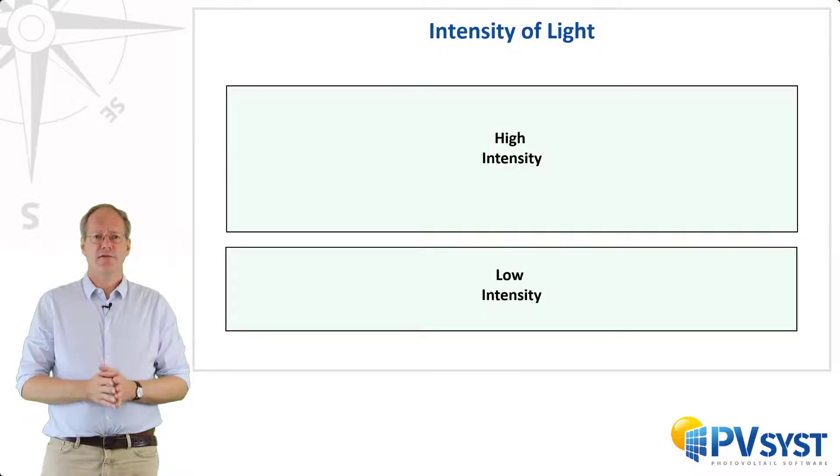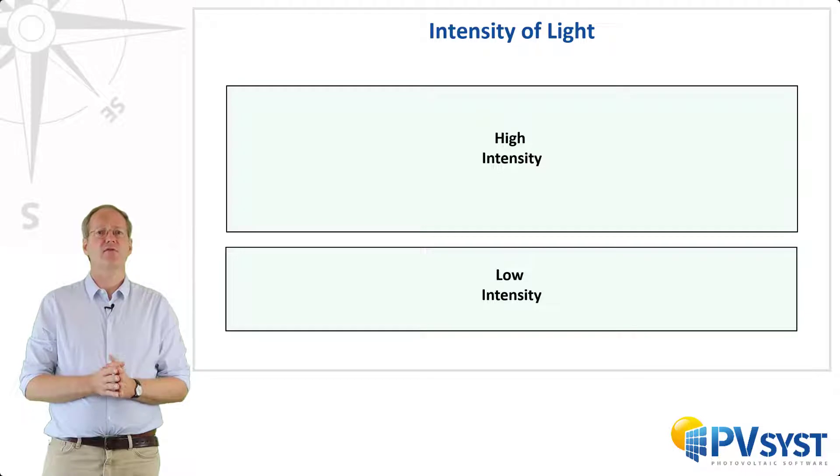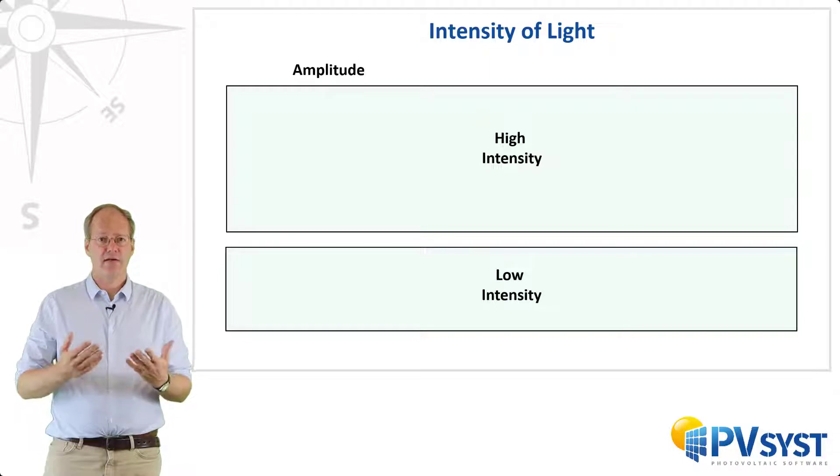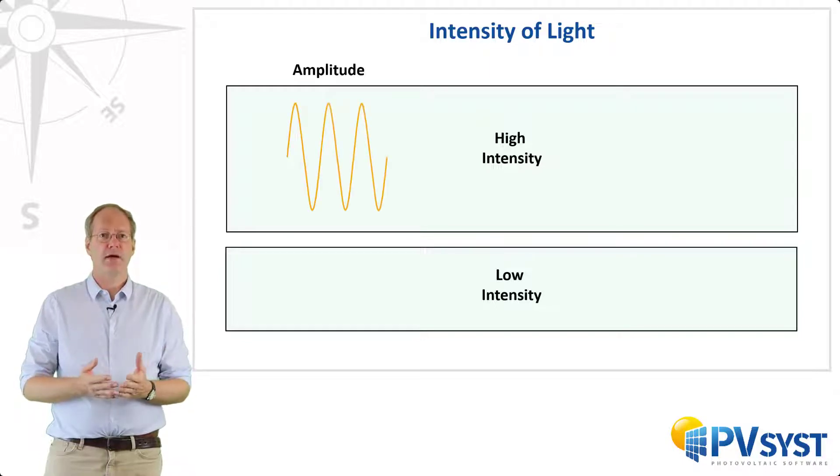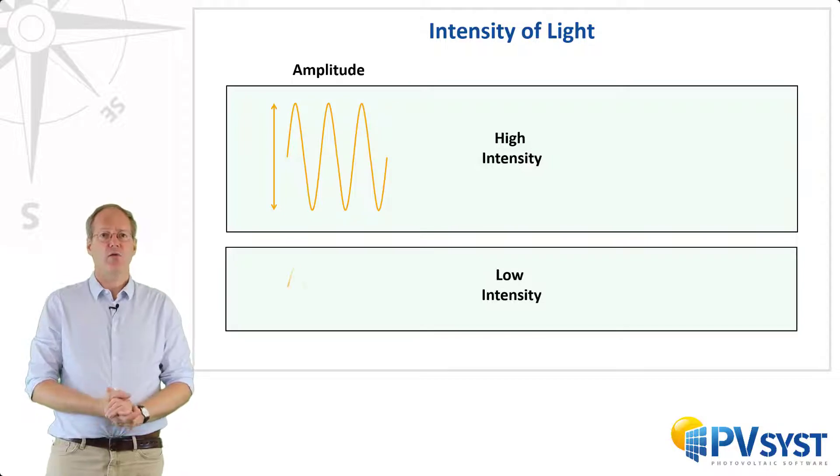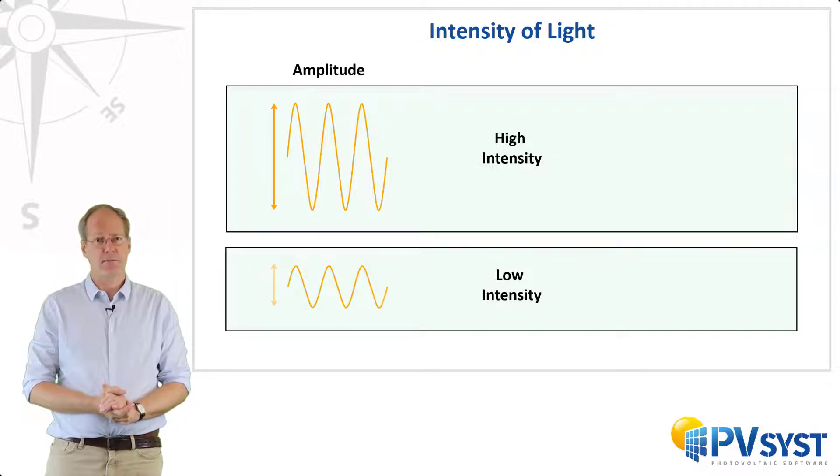Firstly, let's consider the intensity of light. How would we describe intensity in terms of waves or particles? In both cases, how would we differentiate between high and low intensity light? For a wave, we use the amplitude. Higher intensity light would be modeled by a wave with a very high amplitude, while low intensity light would be modeled by a wave with a very low amplitude.